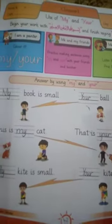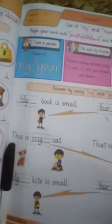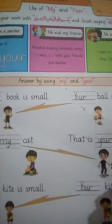Do you know where we use 'my'? We use 'my' when we talk about ourselves. When you talk about something about yourself, you use 'my'. For example, when I talk about my pen, I will say: this is my pen.